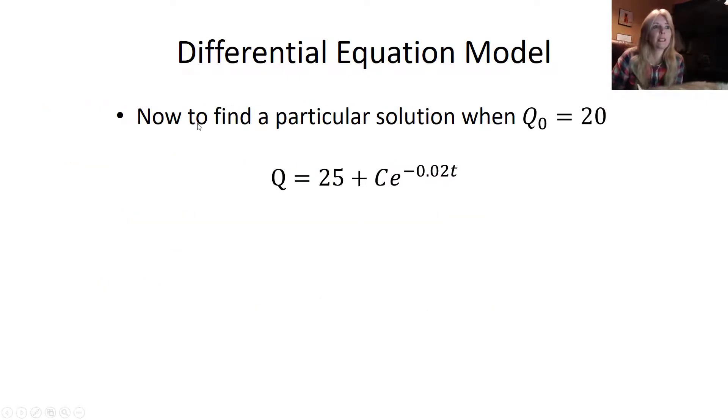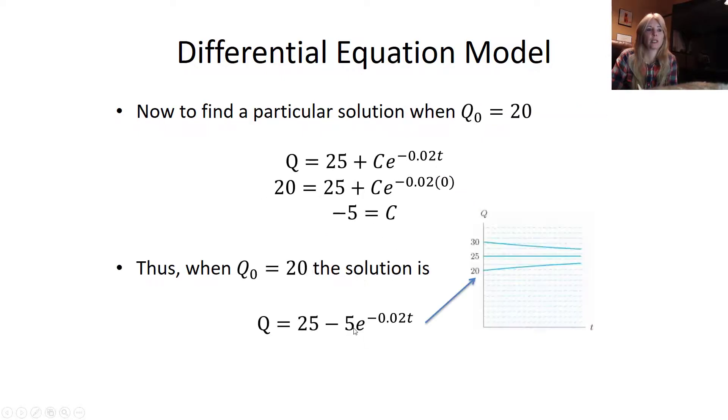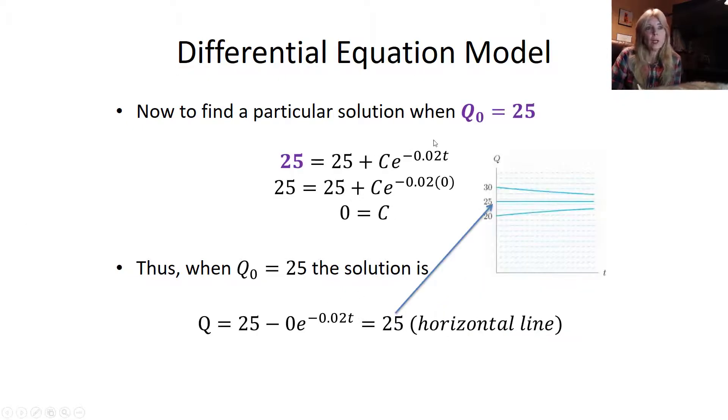Now to find a particular solution when the initial quantity Q sub 0 is 20, I plug 20 in for my initial and now I have something I can solve for C. My initial is at time zero, so I plug zero in here and solve for C. Thus when Q sub zero equals 20, you can see my solution. My C is negative, so I'm trying to head up to my equilibrium of 25.